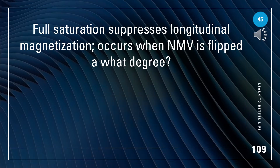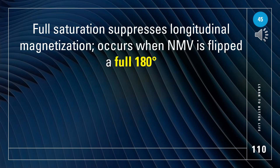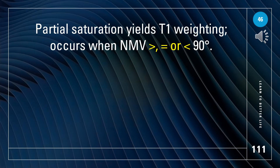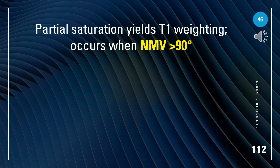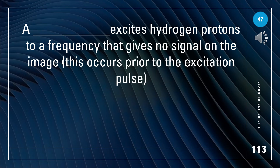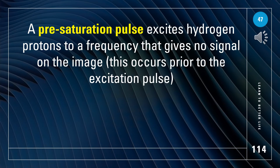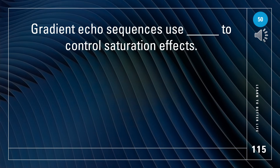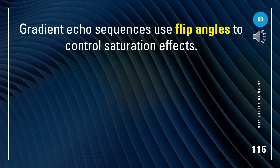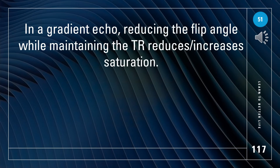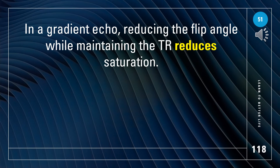The optimal flip angle that yields maximum signal for a particular spin in the least amount of time is the Ernst angle. Full saturation suppresses longitudinal magnetization and occurs when the NMV is flipped 180 degrees. Partial saturation yields T1 weighting and occurs when NMV is greater than 90 degrees. The pre-saturation pulse excites hydrogen protons to a frequency that gives no signal on the image, occurring prior to the excitation pulse. Gradient echo sequences use flip angles to control saturation effects; reducing the flip angle while maintaining TR reduces saturation.